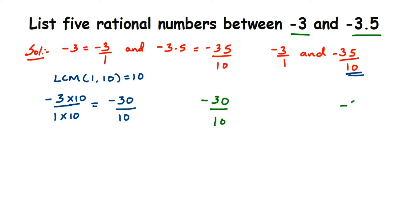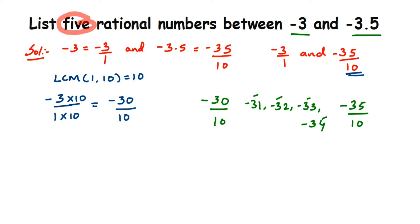Now between minus 30 by 10 and minus 35 by 10, we have numbers like minus 31, minus 32, up to minus 34 — but that's only 4 numbers. The question asks for 5 rational numbers, so we need to do something more.